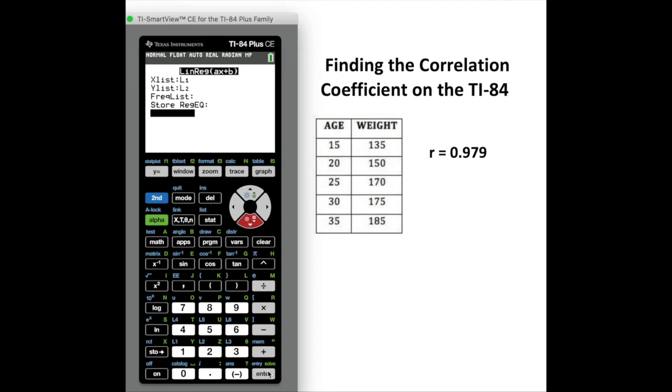You're going to go all the way down to where it says calculate. Once you hit enter, all you're going to get is your slope and your y-intercept for the linear regression. So we are needing that correlation coefficient.